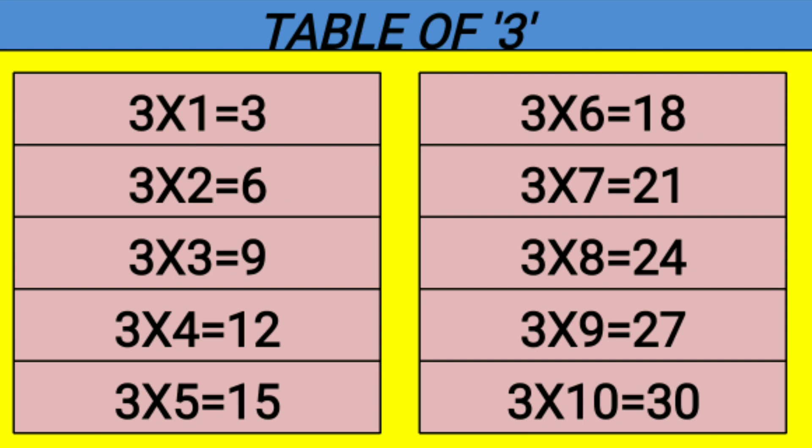Table of 3. 3 1s are 3, 3 2s are 6, 3 3s are 9, 3 4s are 12, 3 5s are 15, 3 6s are 18, 3 7s are 21.